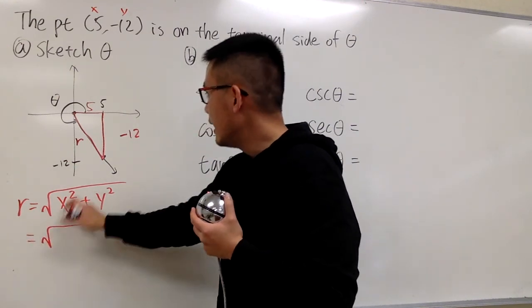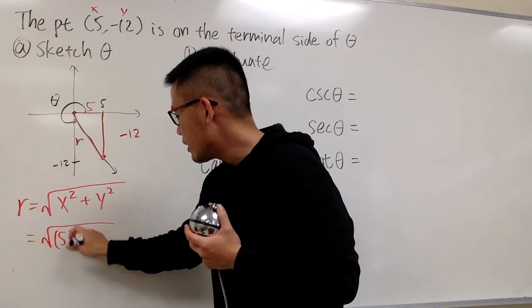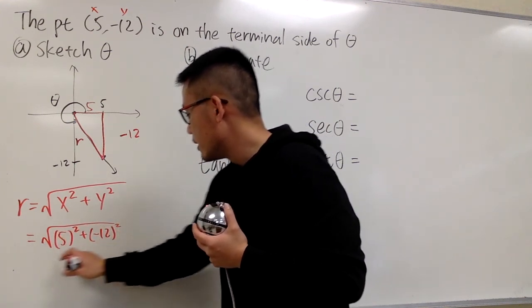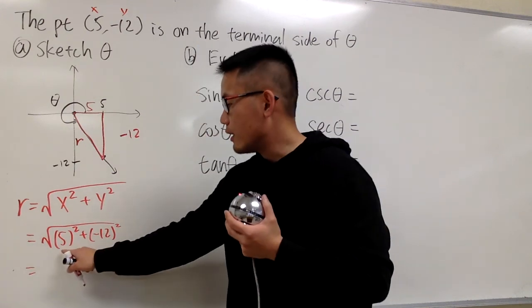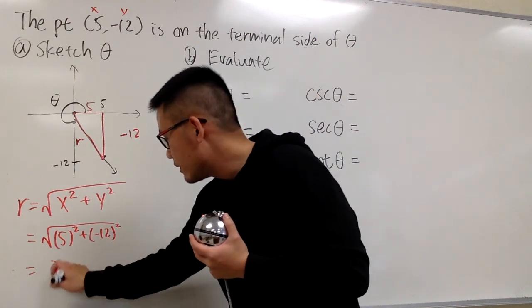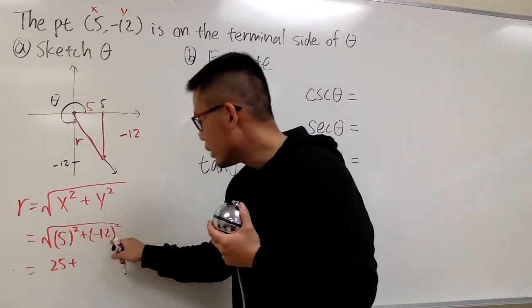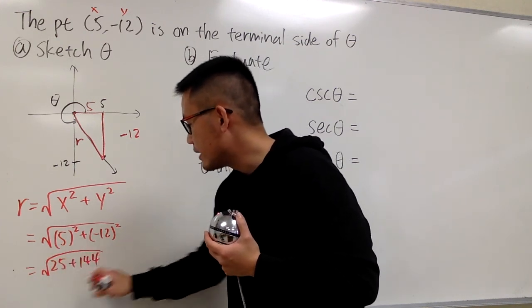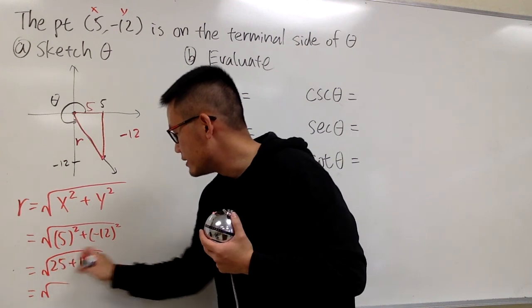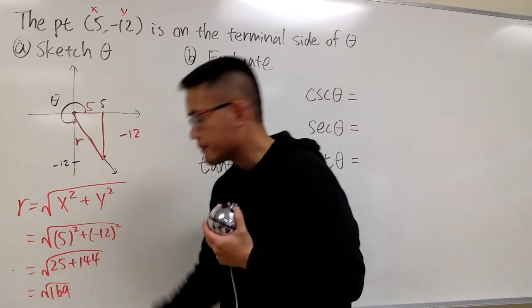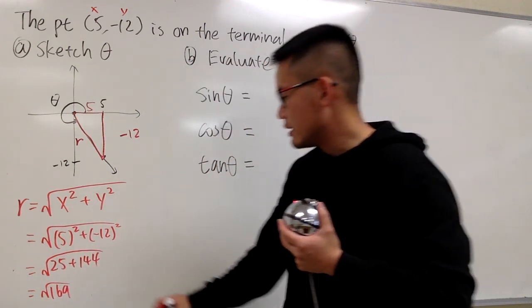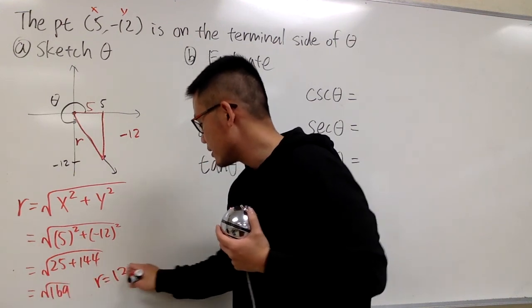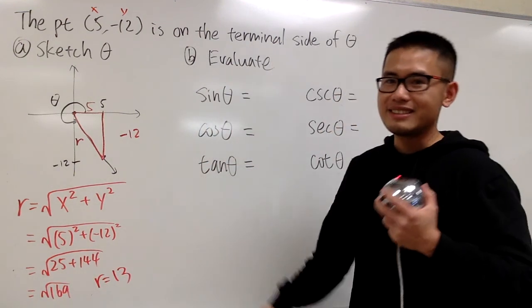This is going to be x is 5, so we have 5 squared plus the y value is negative 12 squared. And we have 5 squared is 25, and then we add it with negative 12 squared is positive 144. We take the square root for that. This is square root of 169. And square root of 169, we know this is going to be 13, whole number 13, nice number.